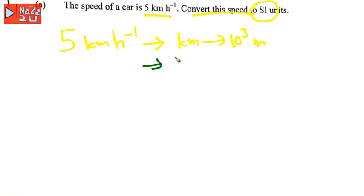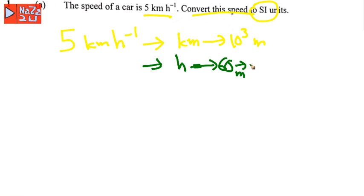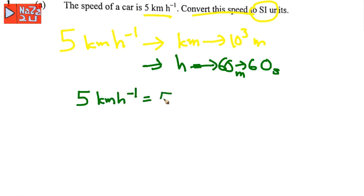Now convert hours to seconds, because the SI unit for time is seconds. One hour equals 60 minutes, and one minute equals 60 seconds.